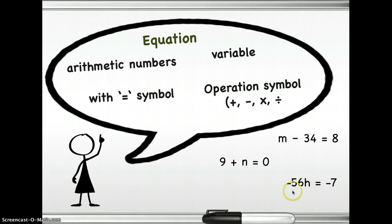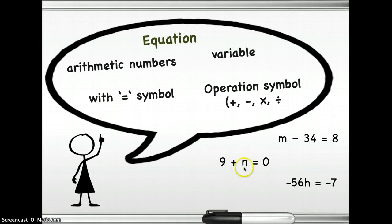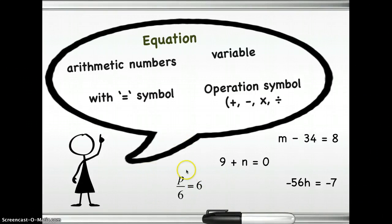Another example: negative 56h, or negative 56 times h, equals negative 7 — this is an example of an equation. An equation does not necessarily have to have a variable; a simple 9 plus 3 equals 12 is also an equation. Now let's have another example: p divided by 6 equals 6. Remember that whenever you see a fraction, a fraction is also a division.